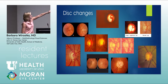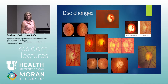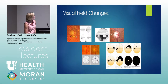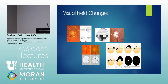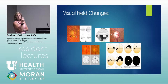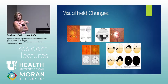An optic nerve photo that looks normal could very well be glaucoma. Visual field changes include paracentral scotoma, nasal step, hemorrhage, and central island. Importantly, if you see a hemorrhage, do a central 10-2 field — the ADAGE study showed that with a disc hemorrhage, a 24-2 field was normal but a central 10-2 revealed early damage within the central 10 degrees.